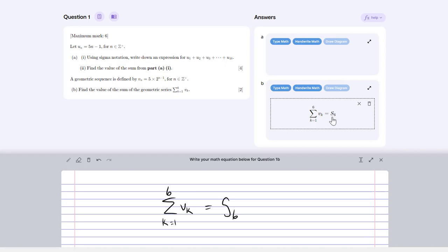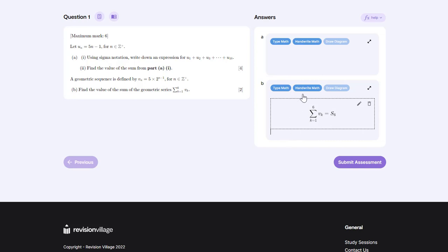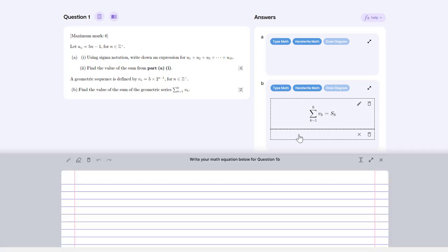Now I want to write one more line of working where I show the formula for the sum of six terms of a geometric sequence. I'll just click outside of that box and click handwrite math again to get a second line of working.